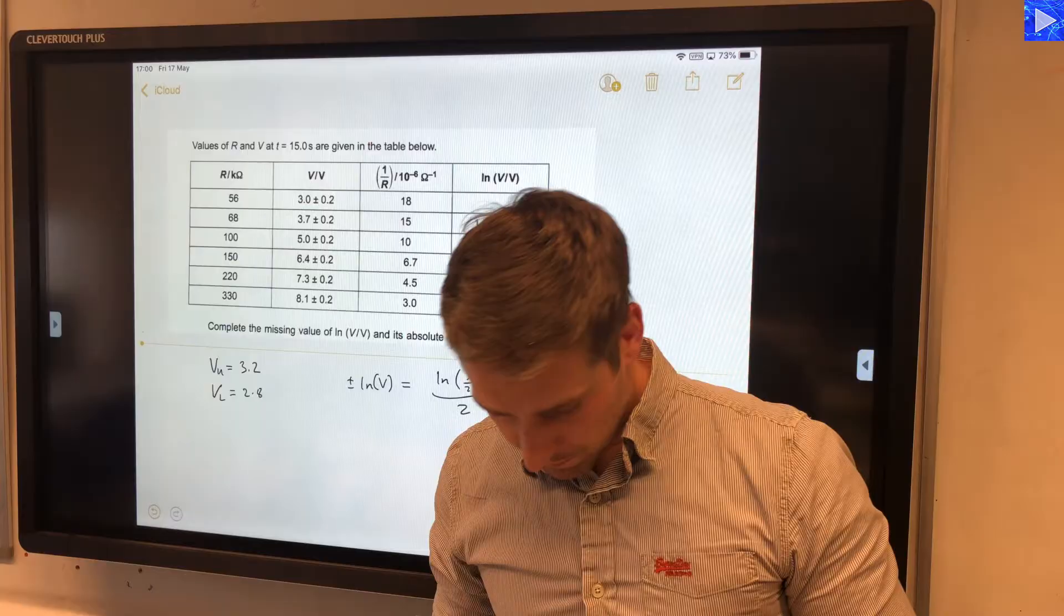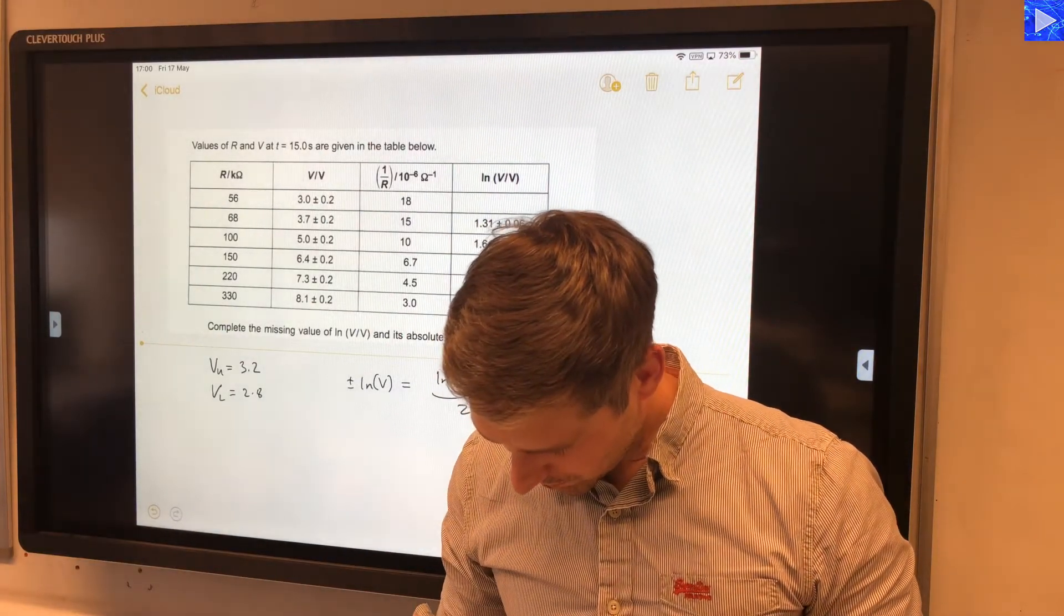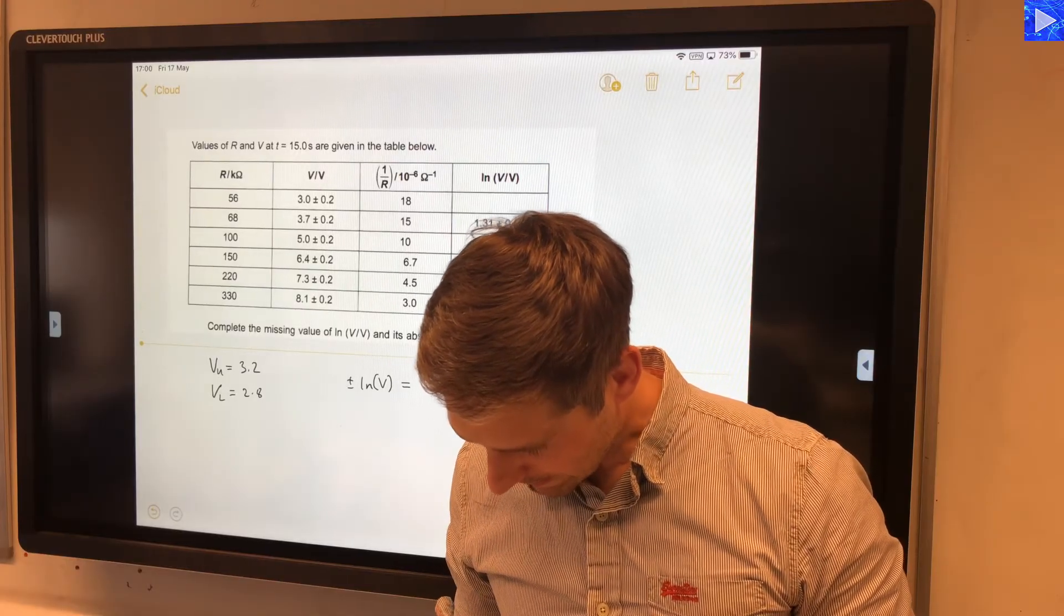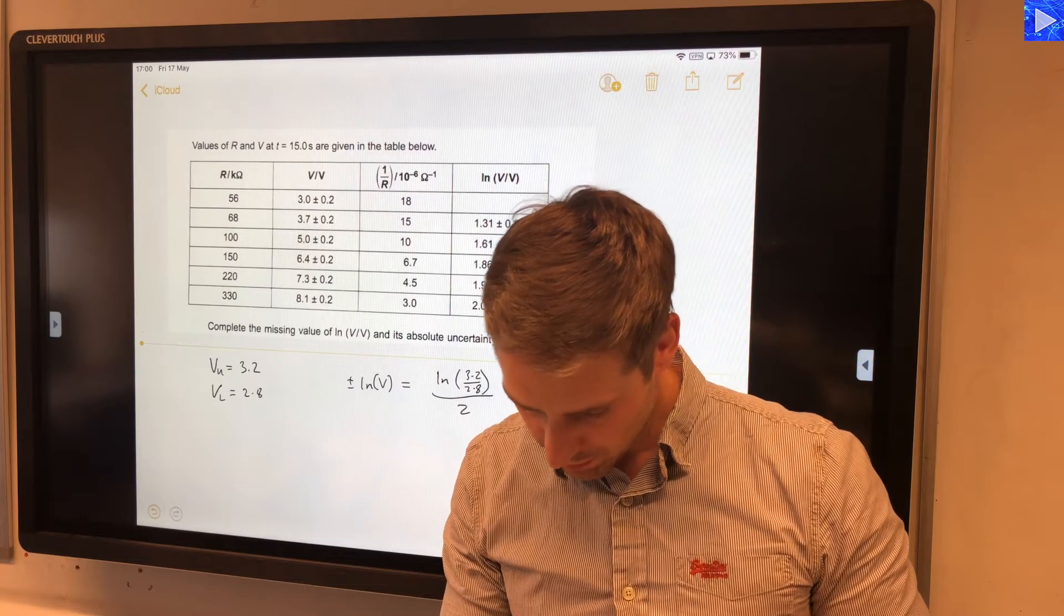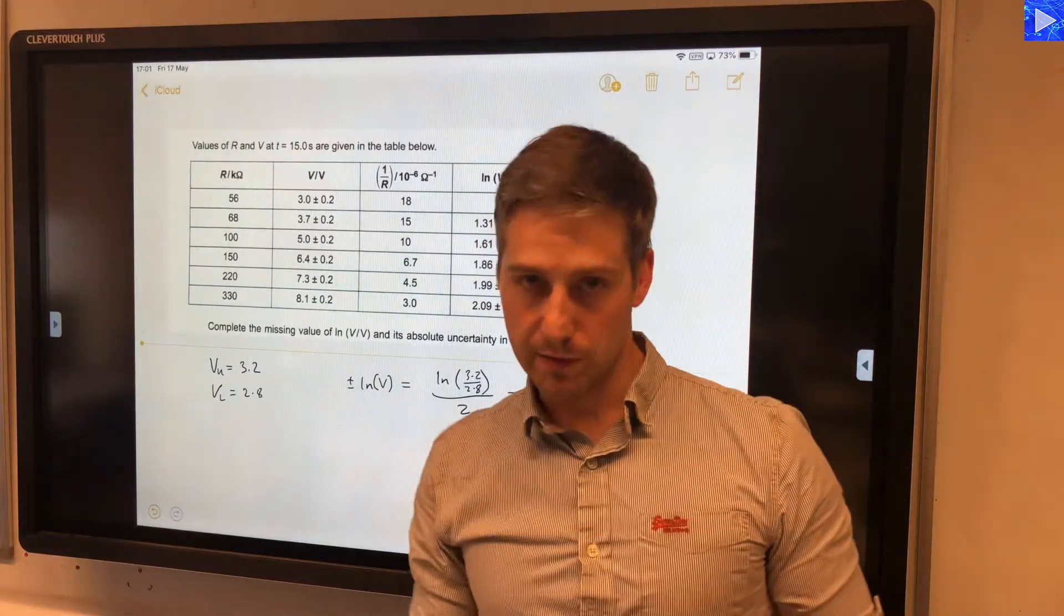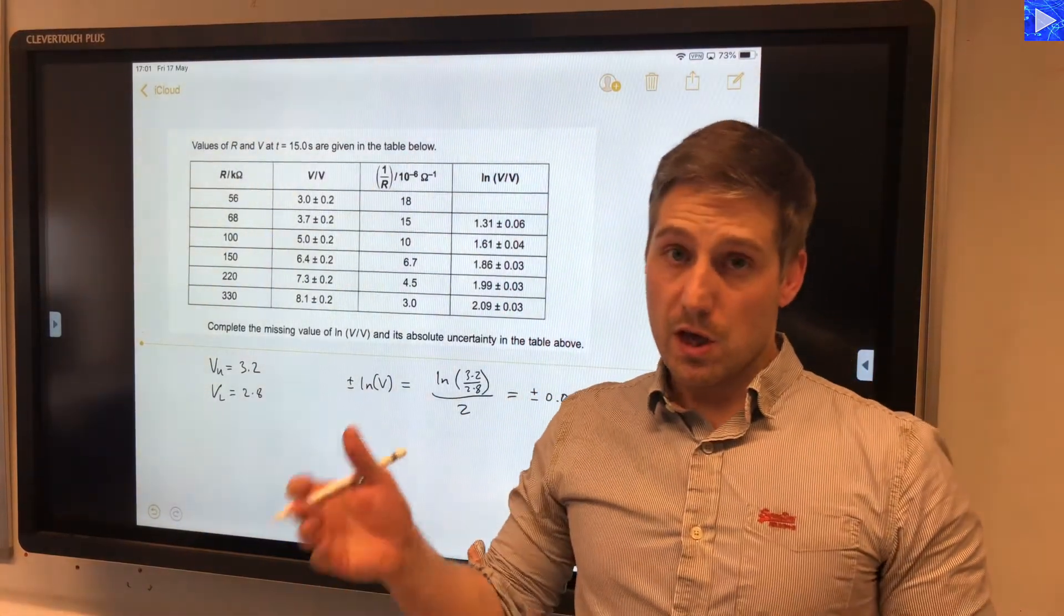And so when we do this, natural log of 3.2 divided by 2.8, all over 2, that comes out as...